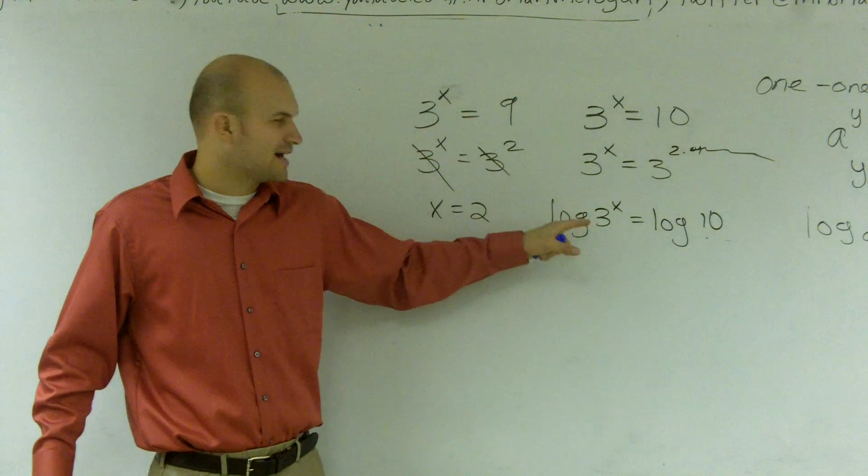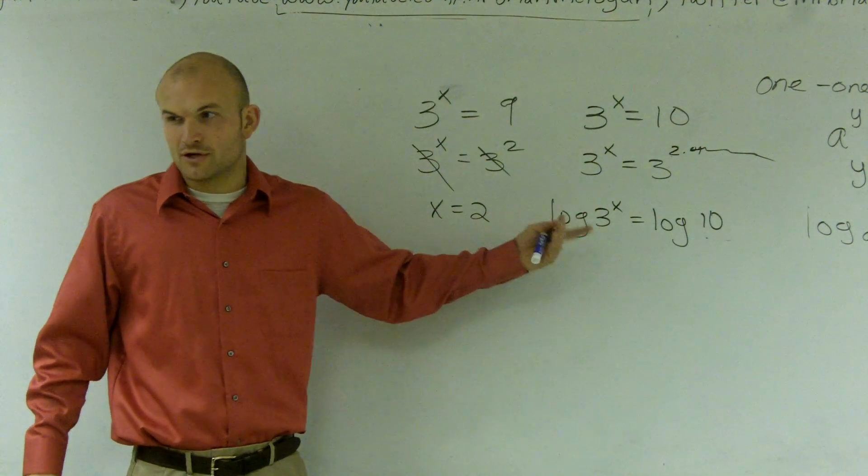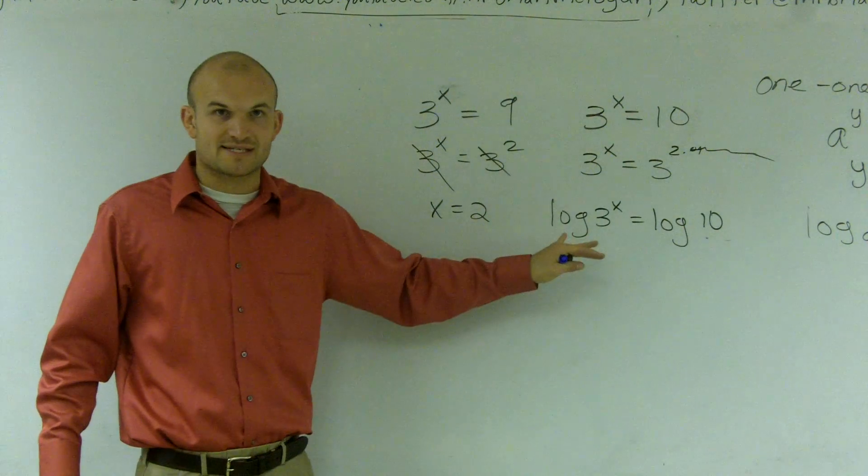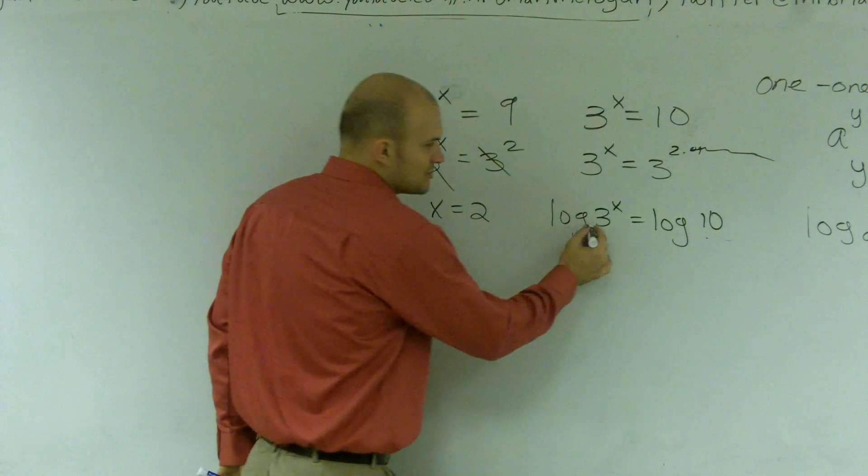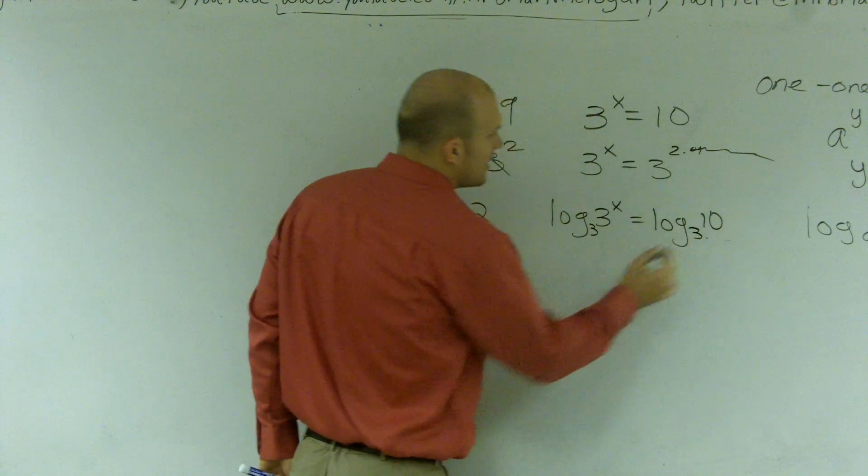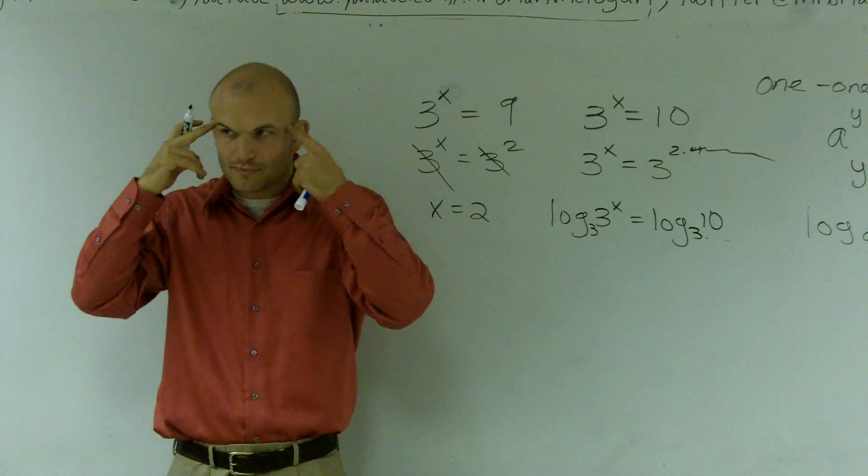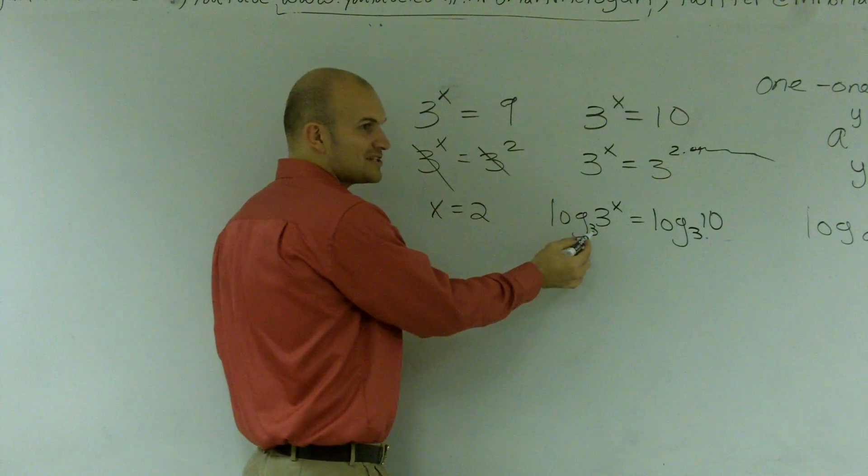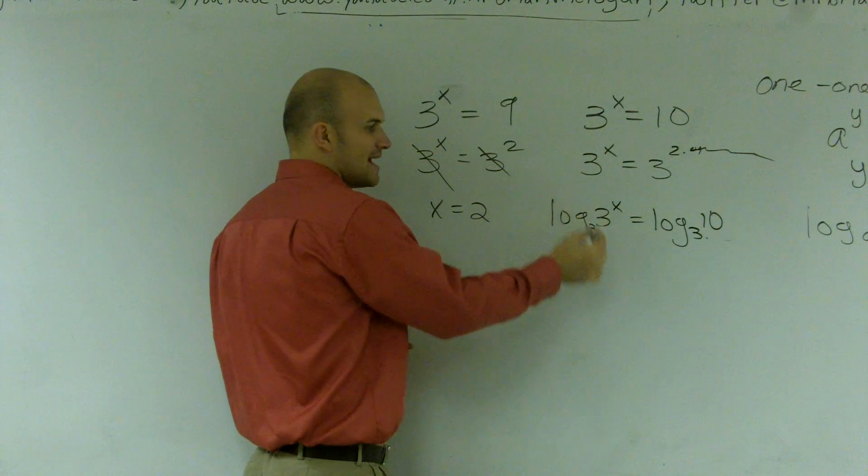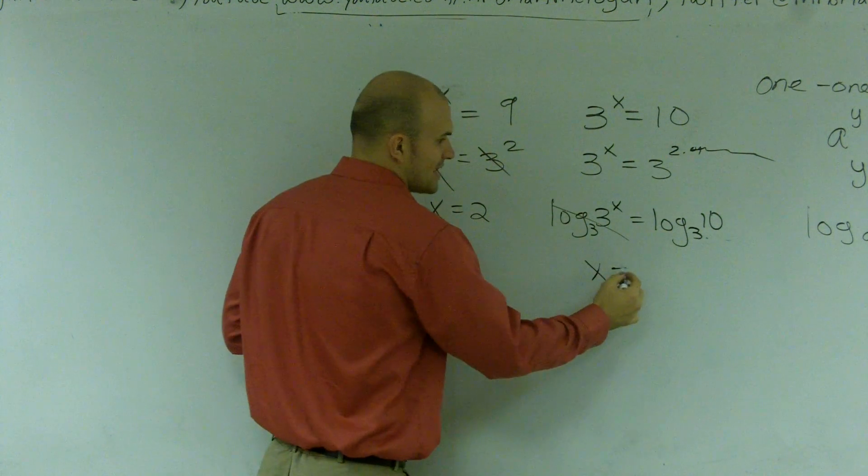Well, because if I take the log, I don't want to use log base 10. Remember, when you write a log and you don't put the base, it's base 10 we assume. But I want to choose log base 3. And the reason why I want to take log base 3 is because my inverse properties, log base 3 of 3 raised to the x just equals x.